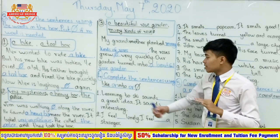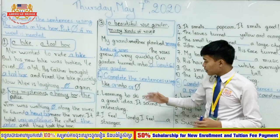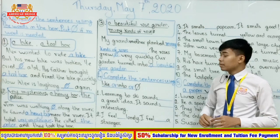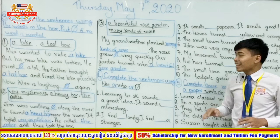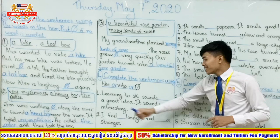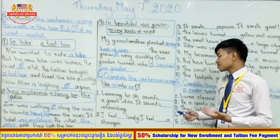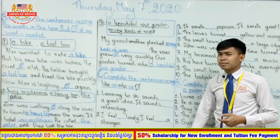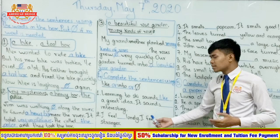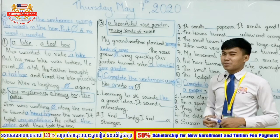Exercise 4: complete the sentences using 'like,' 'into,' or 'none.' There are ten sentences with blanks. Number 1: Learning to ski sounds — what? Sounds like a great idea. It sounds interesting — no word needed, 'none.' So: Learning to ski sounds like a great idea; it sounds interesting.